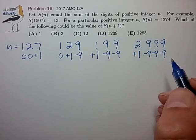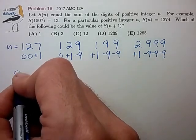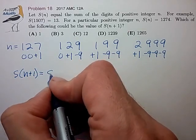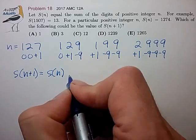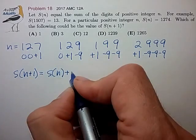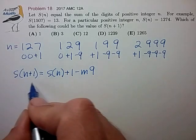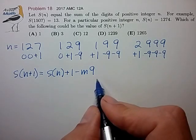So I think I see what's going on here. When we go to the n+1 case, we take the sum of the n case, we add 1, and we subtract a multiple of 9.